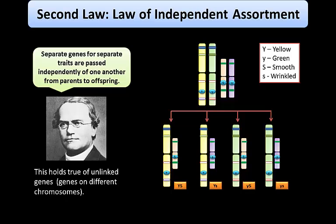Different pairs of alleles behave independently — during segregation they separate randomly and independently and are not linked to each other. This is because different pairs of alleles are located on different pairs of homologous chromosomes. As shown in the figure, each chromosome has its individual allele, and while separating, each allele separates differently. These genes do not influence each other and each remains independent and unique.